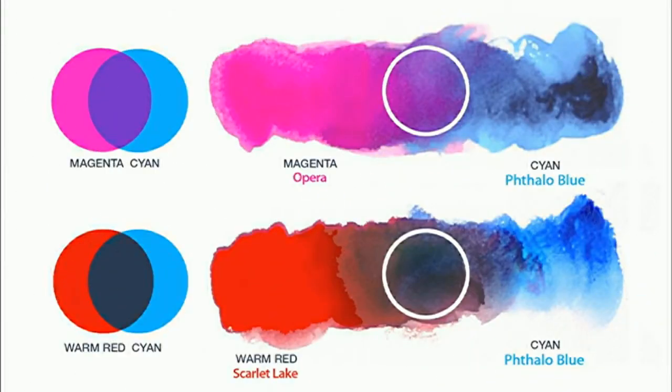For instance, red and blue made a muddy purple, and artists had to buy a tube of purple paint to get the correct color.